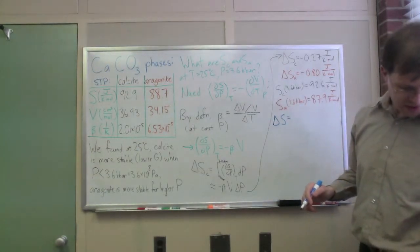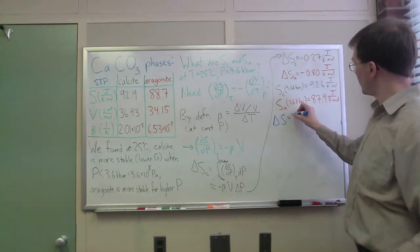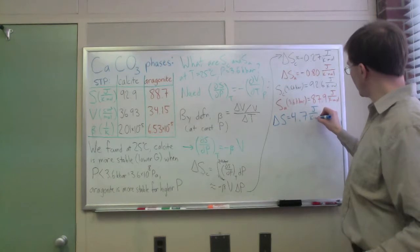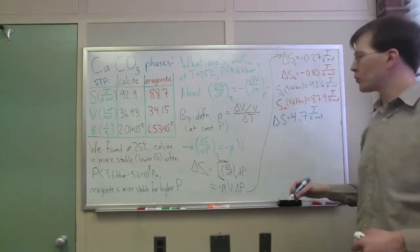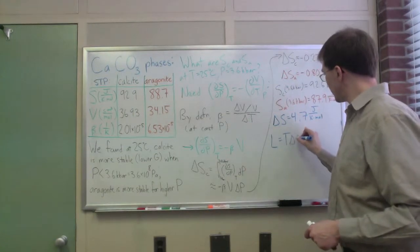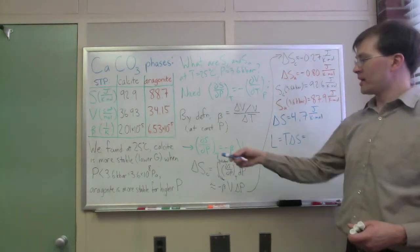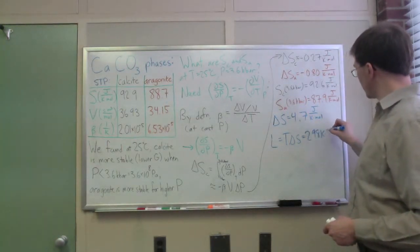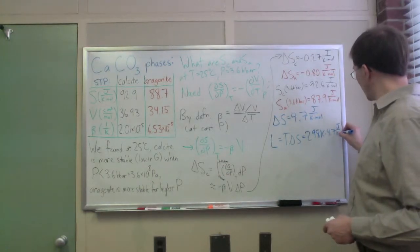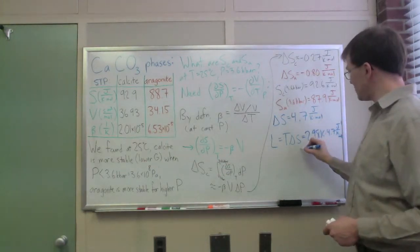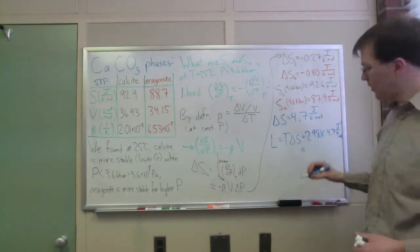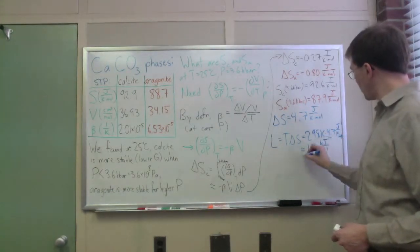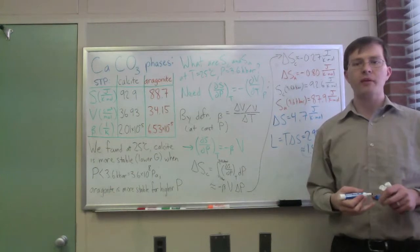Finally I can work out my L equals T delta S—multiply that by my same 298 Kelvin times 4.7 joules per Kelvin per mole. That ends up being roughly 1.4 kilojoules per mole, which is not quite the same as the 1.25 kilojoules per mole we had previously.